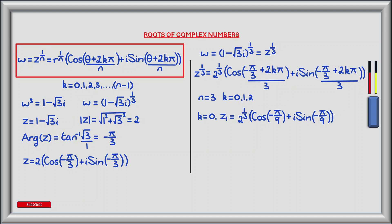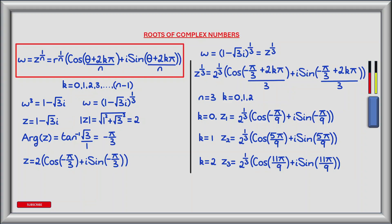Beginning with k equals 0, we find our first root z1, which equals 2 to the power of a third times the bracket of cos(−pi/9) plus i times sin(−pi/9). When k equals 1, we find our second root z2, which equals 2 to the power of a third times the bracket of cos(5 pi/9) plus i times sin(5 pi/9). The third and final root, z3, is found when k equals 2, and equals 2 to the power of a third times the bracket of cos(11 pi/9) plus i times sin(11 pi/9).